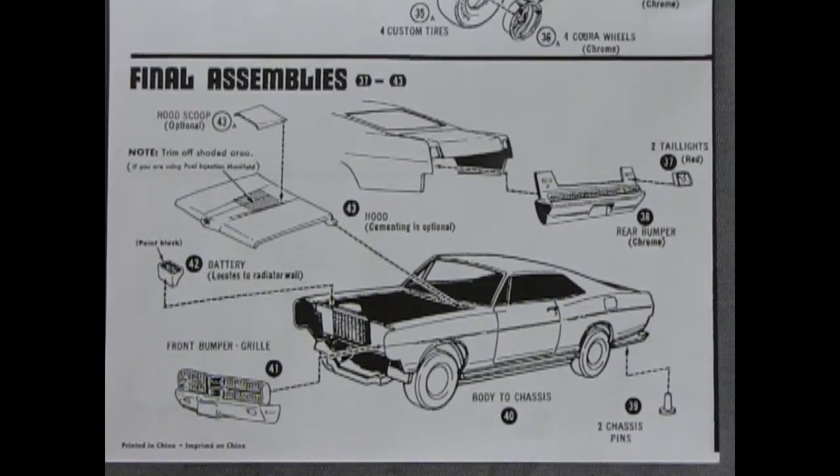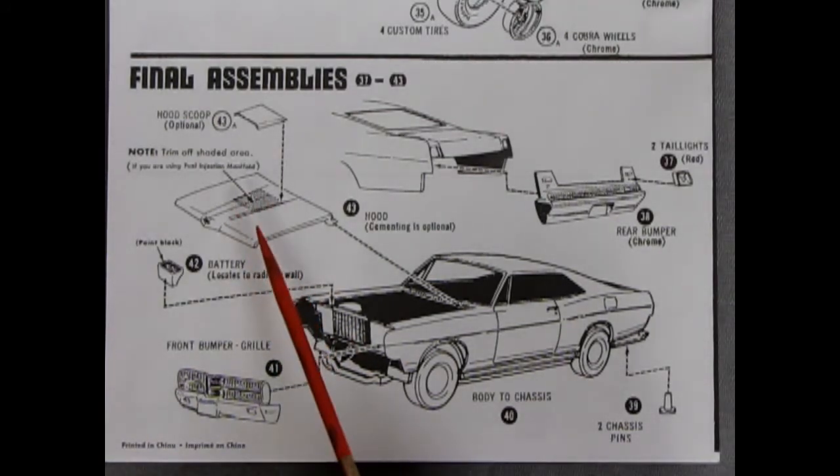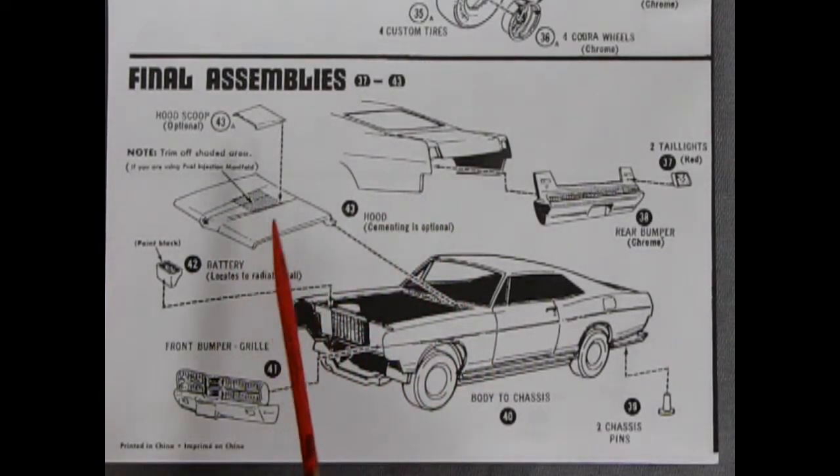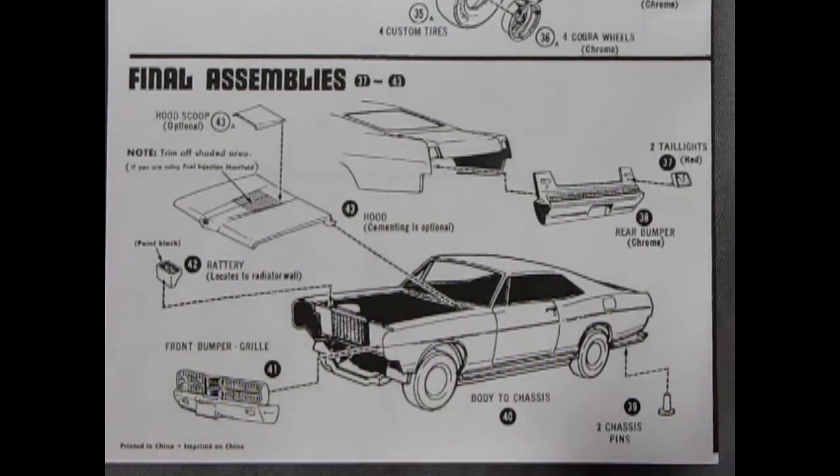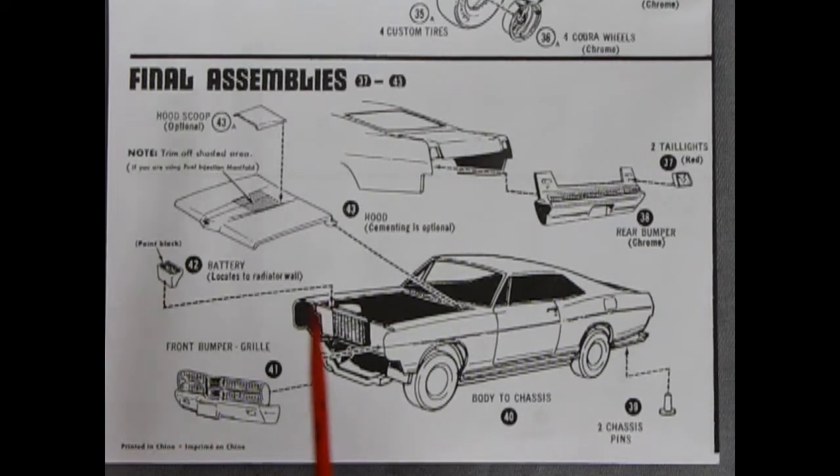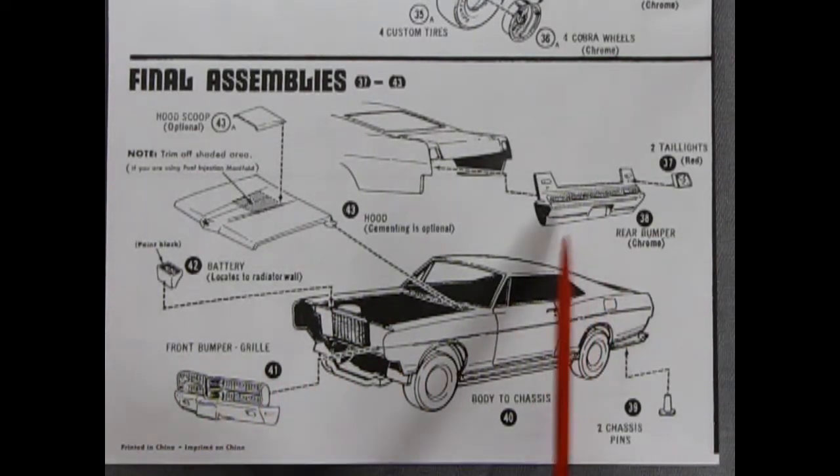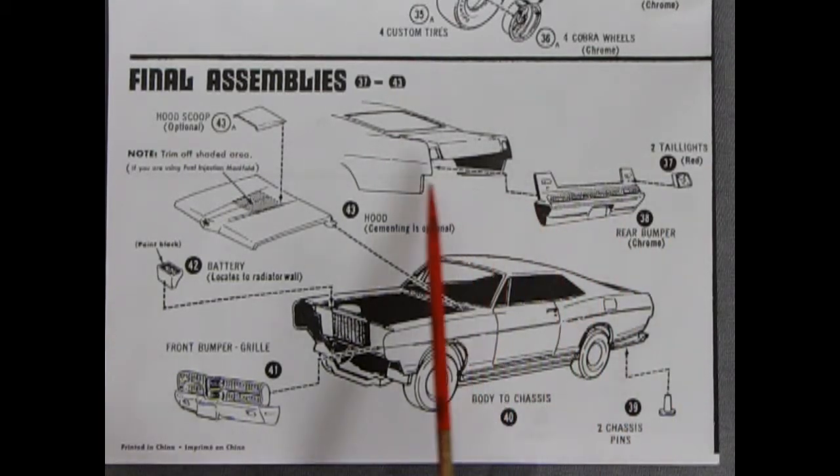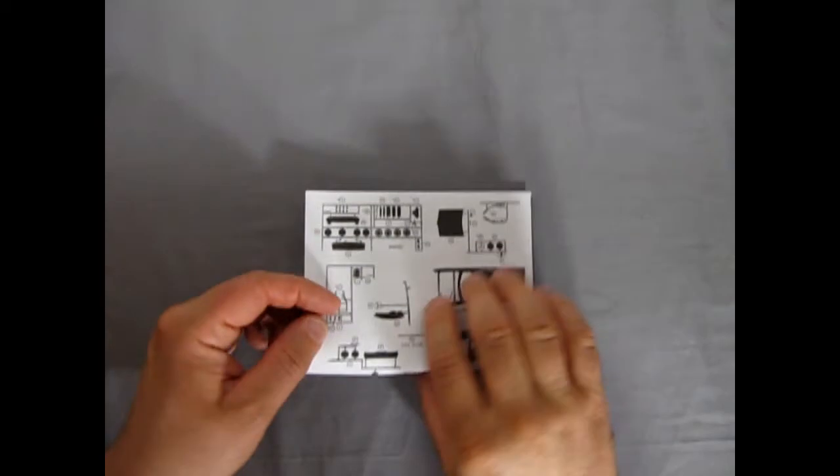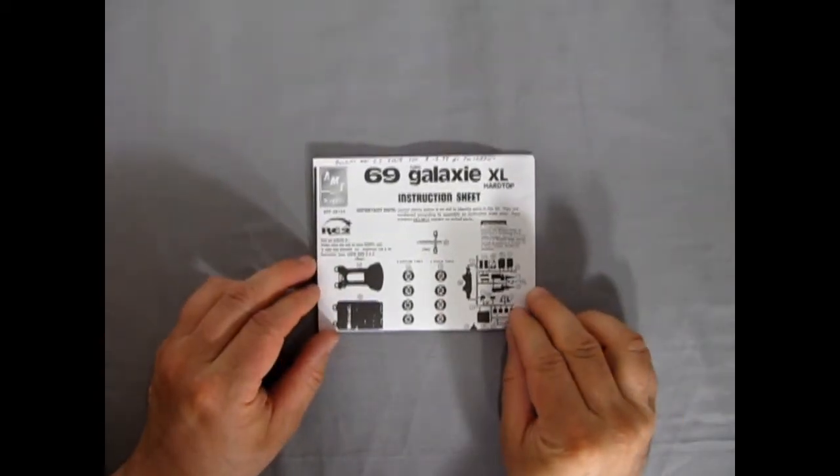And here we have the final assembly. So we have a hood and you can cut a hole in it and glue this hood scoop over the top for those velocity stacks or the big double two barrel carburetors. And it slips right into the body here. There's those chassis pins because we don't use screws anymore. Posh! So passe! And there's our battery we paint in here and glue onto the radiator wall. Now I do believe with Fords they would be black across this as well as black on the firewall. You can always look that up in your research. The front bumper and grille will glue on there. And the rear bumper has red tail lights which will glue on and then the whole thing glues on to the back. And there you have your 69 Ford. And that completes our look at the 69 Galaxy XL hardtop instruction sheets.